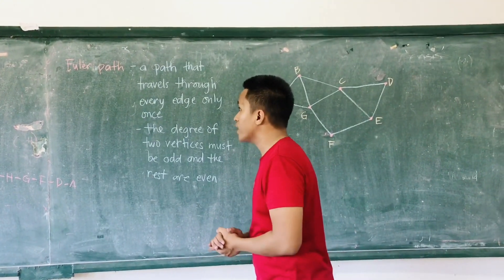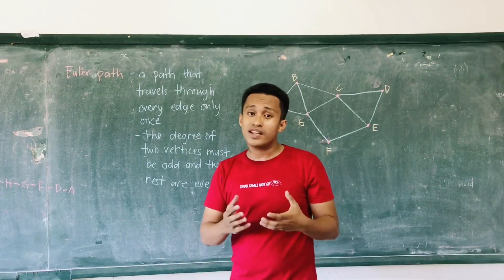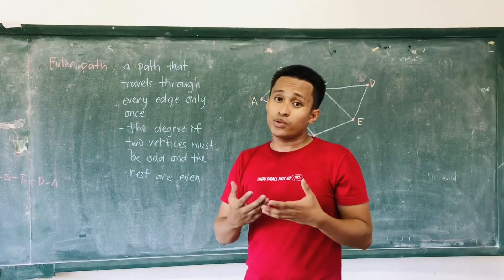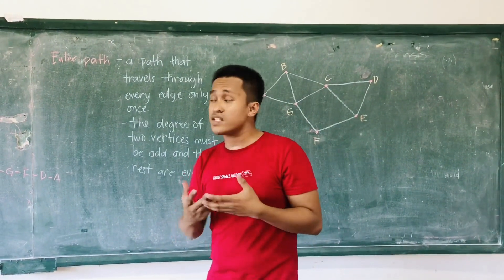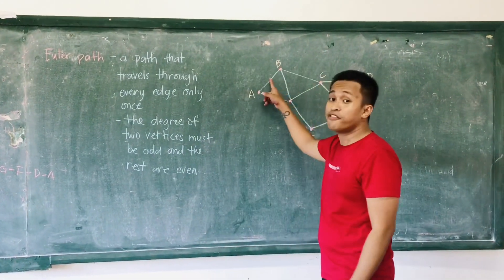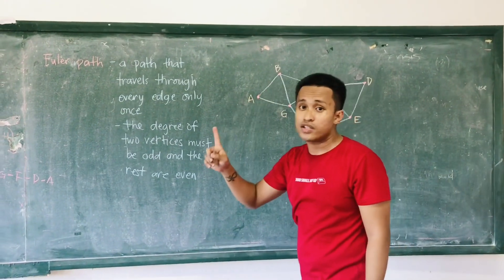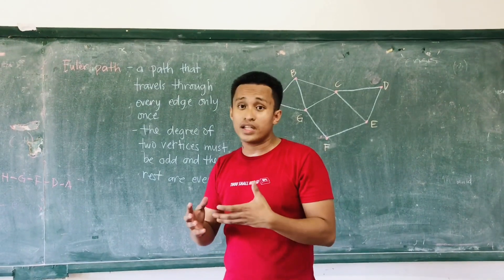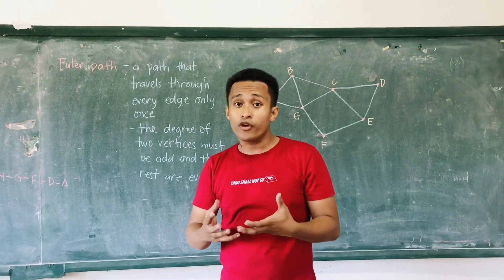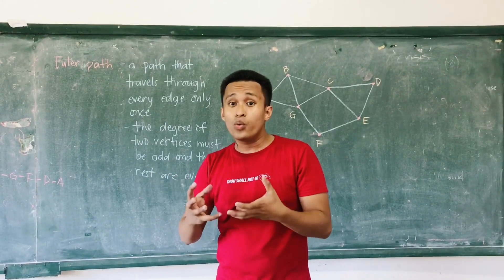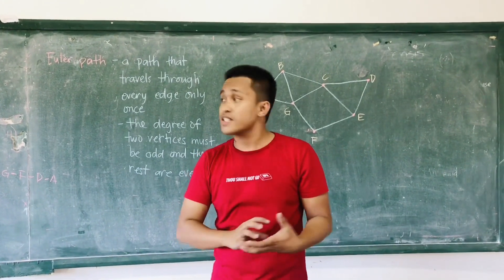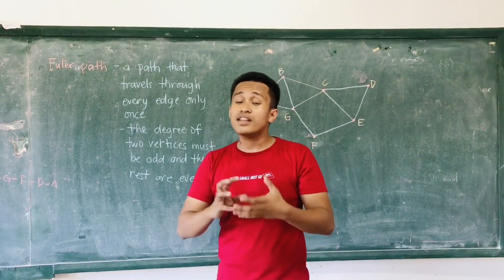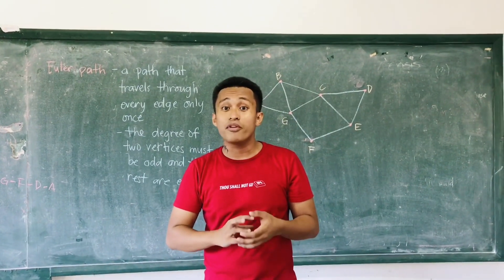Now we will be talking about the Euler path. The similarity between Euler path and Euler circuit is that they both pass through all of the edges in a specific graph only once. But the difference is that an Euler circuit must start and end with the same vertex, whereas an Euler path does not necessarily end with the same vertex.